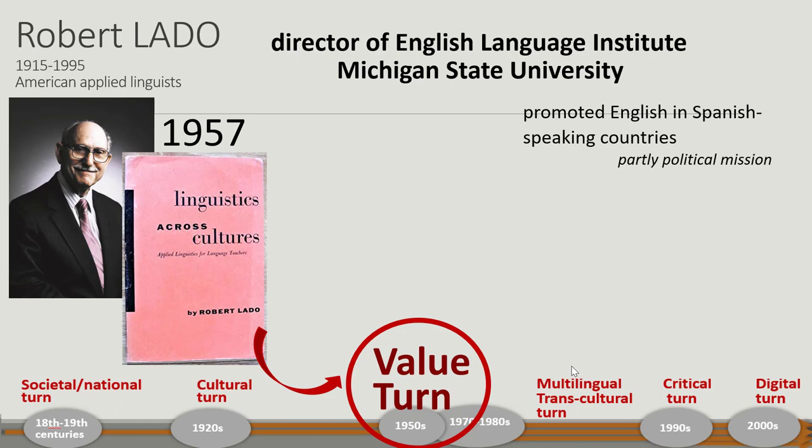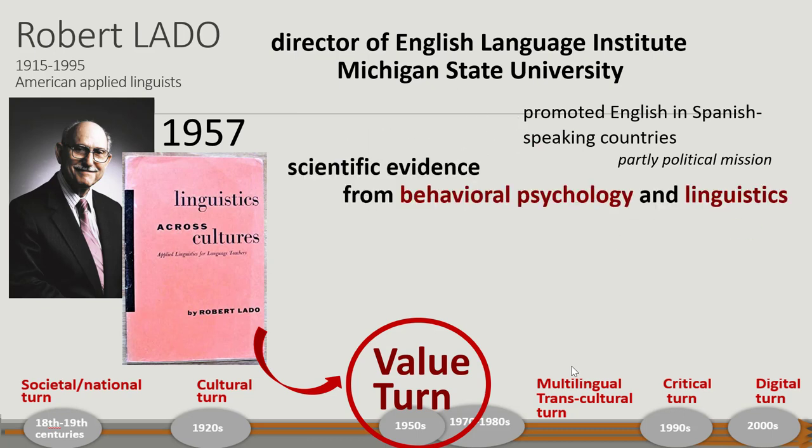The concern to spread English was linked to the intention to resist the growing influence of German during and after World War II. In the 1940s and 1950s, Lado and his colleagues conducted research on how best to teach English based on scientific evidence, mostly from behavioral psychology and linguistics.